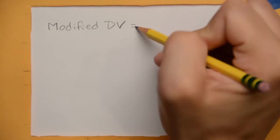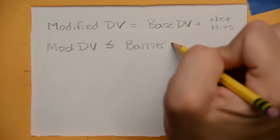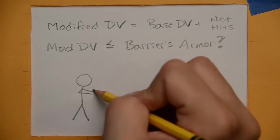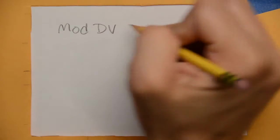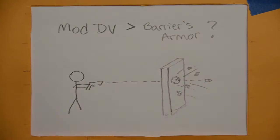If this number does not exceed the armor rating of the barrier, adjusted by the weapon's armor penetration of course, then the bullet stops dead and nothing happens. However, if the modified damage value exceeds the AP-adjusted armor value of the barrier, then the bullet goes through.